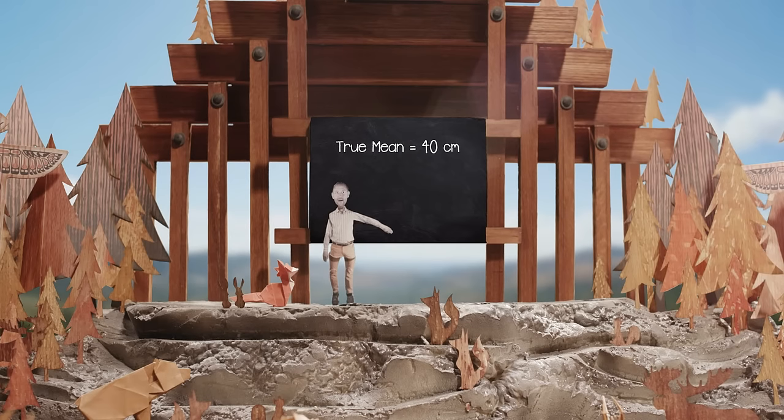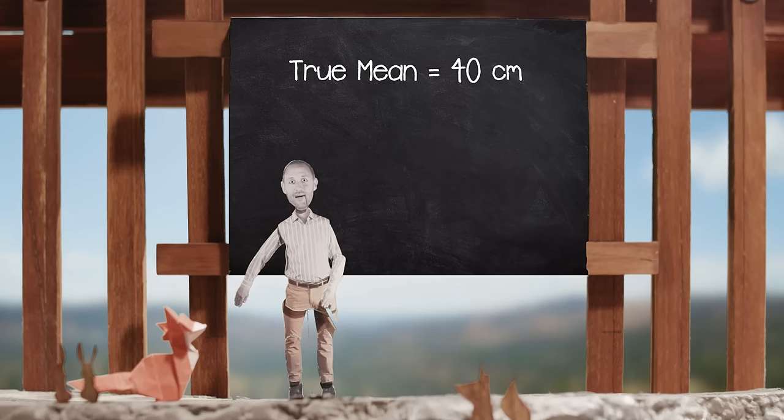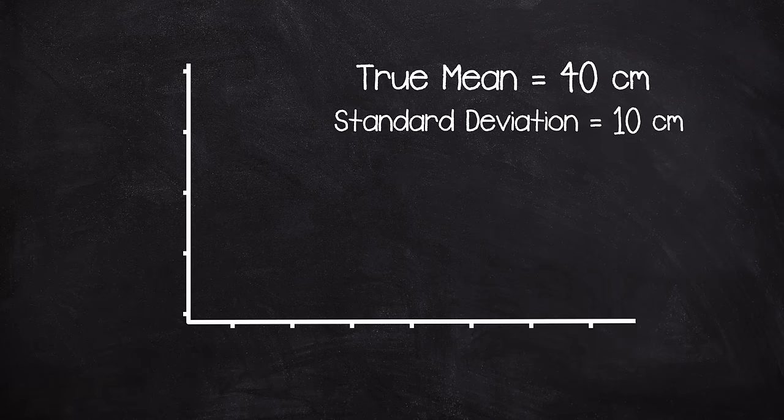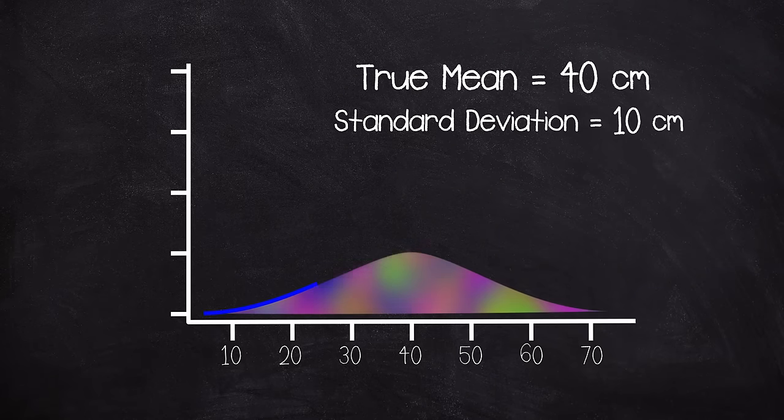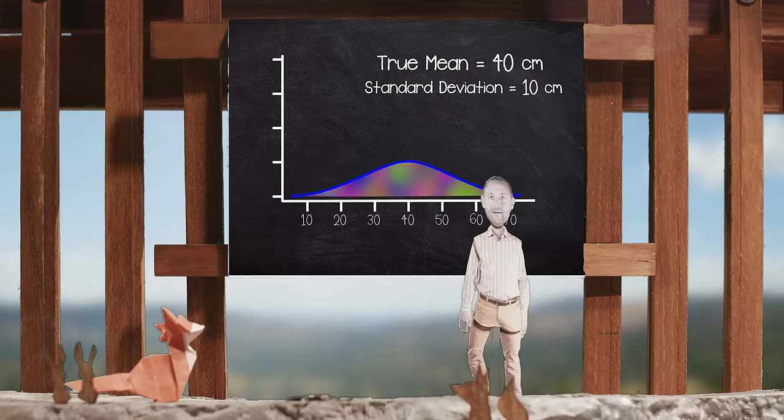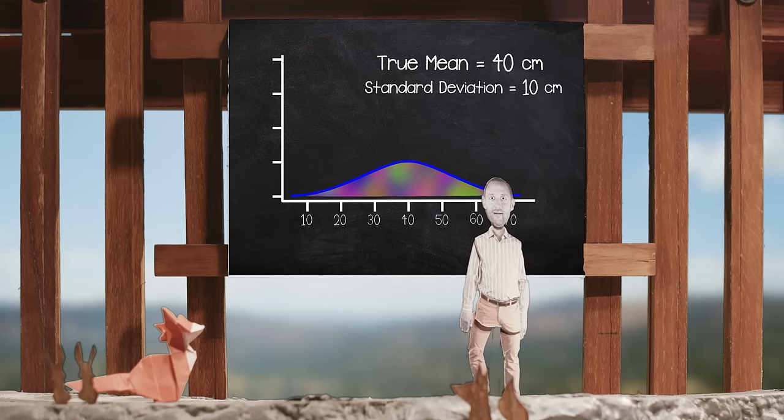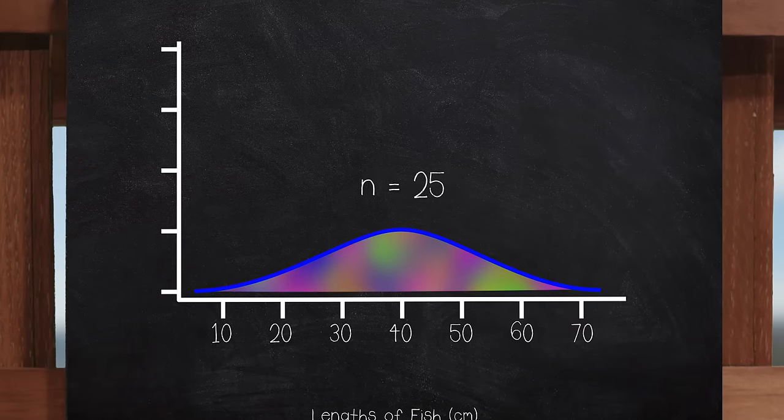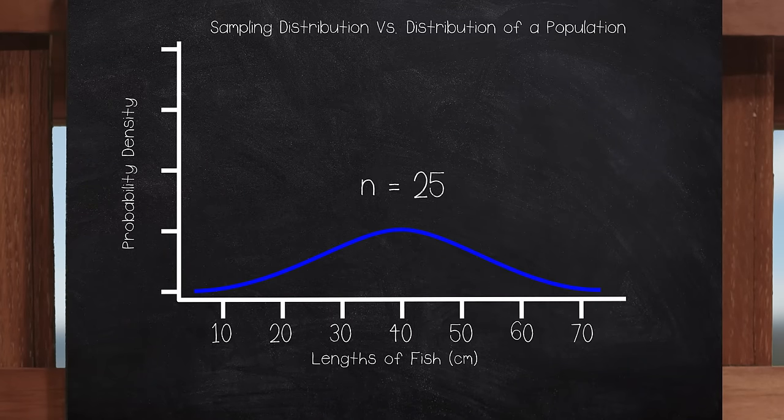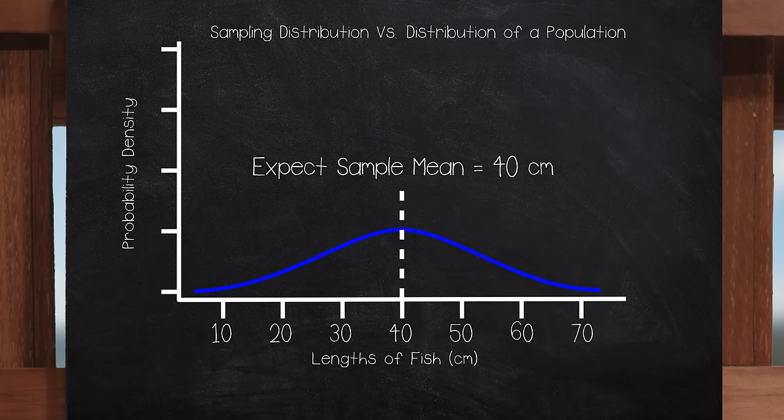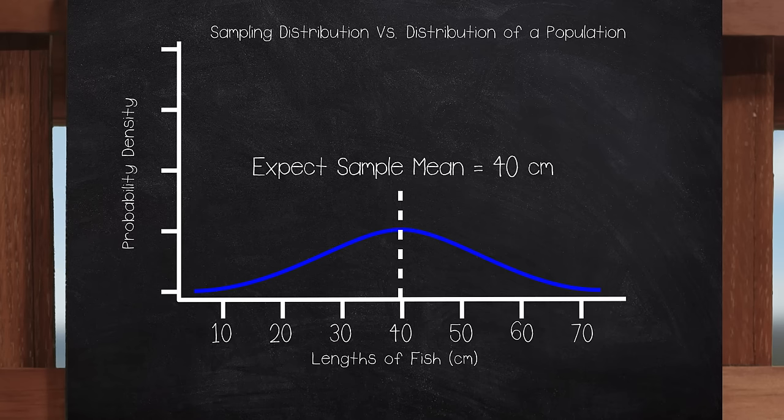Thanks to Neptune, we now know that the true mean of fish in the lake is 40 cm, and the standard deviation is 10 cm. And we know that the distribution of the lengths of all fish looks like this. Then what's going to happen is we're going to go out with our fishermen, and we're going to take a random sample of 25 fish from this population. And when we take that sample of 25 fish, we expect our sample mean to be equal to 40 cm, the true population mean. Although, we know that it's not going to be exactly equal to 40, due to what we call sampling variability.